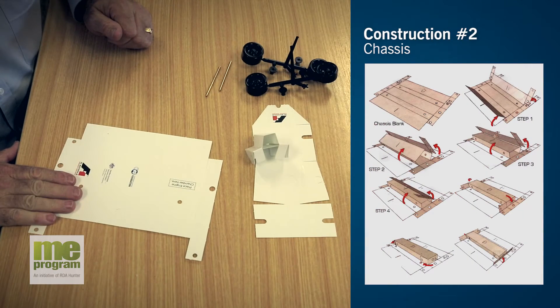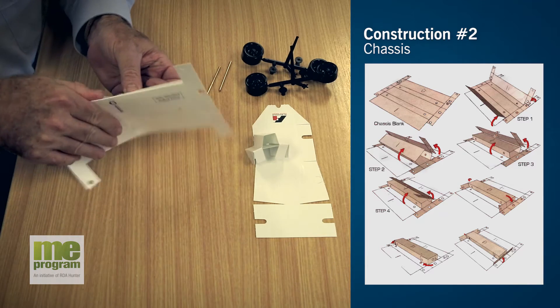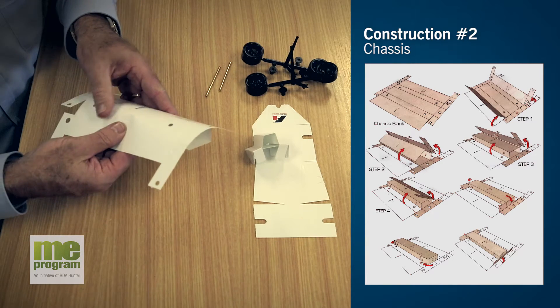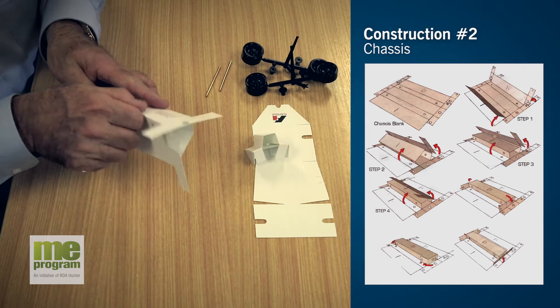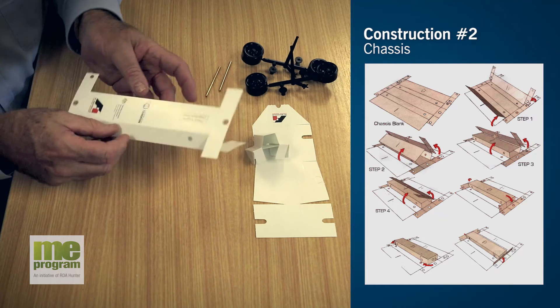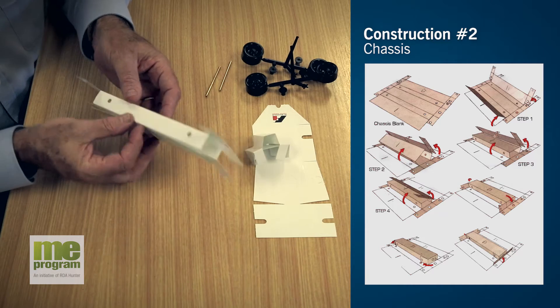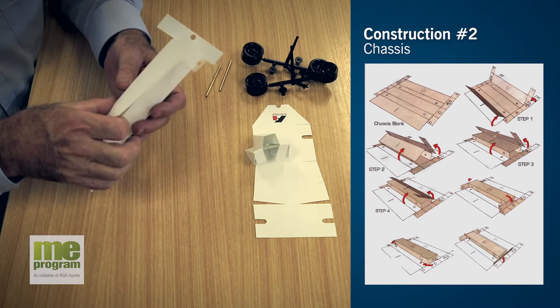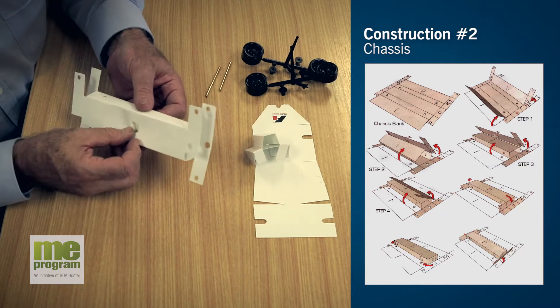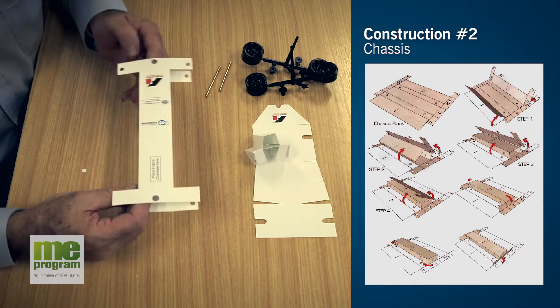We're moving on to the chassis, which is probably the most important component. But again, it is fundamentally a box, so we just fold up the box. There is actually a tag on the bottom of the box that allows us to clip the top and bottom faces together.